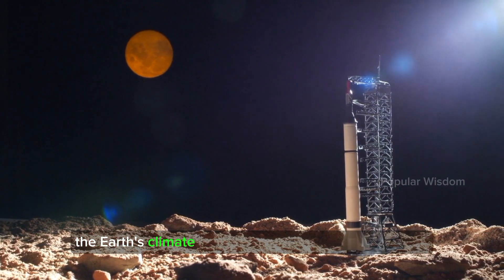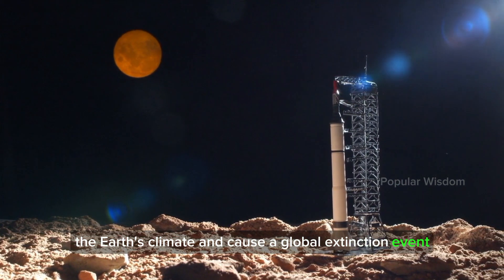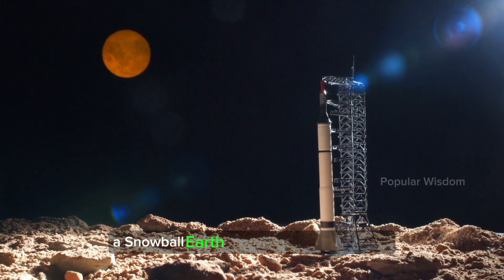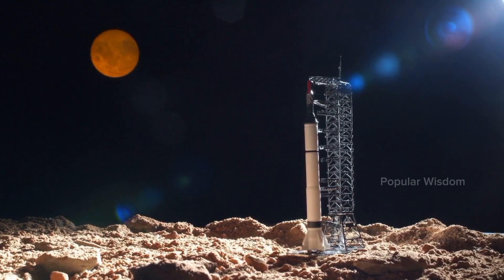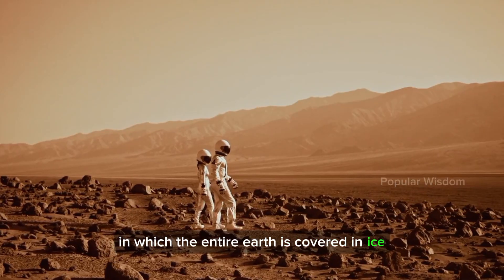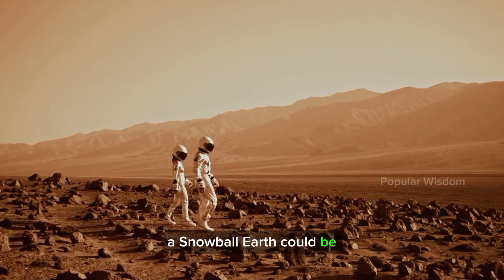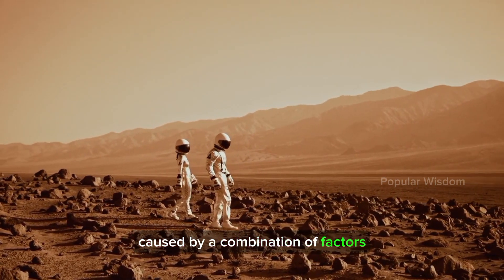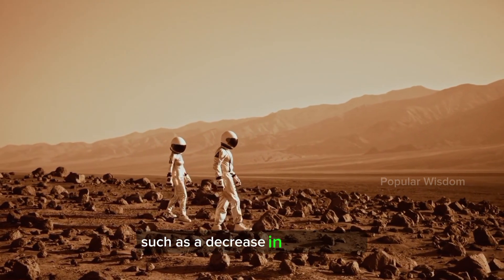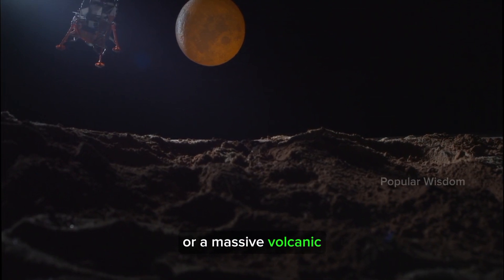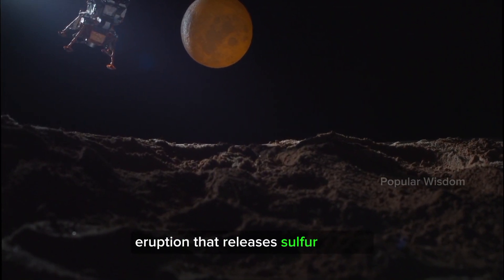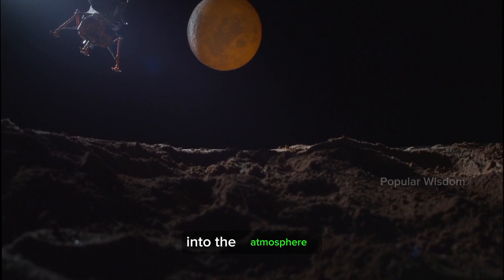Snowball Earth: A snowball Earth is a hypothetical scenario in which the entire Earth is covered in ice. A snowball Earth could be caused by a combination of factors, such as a decrease in solar output or a massive volcanic eruption that releases sulfur dioxide into the atmosphere.